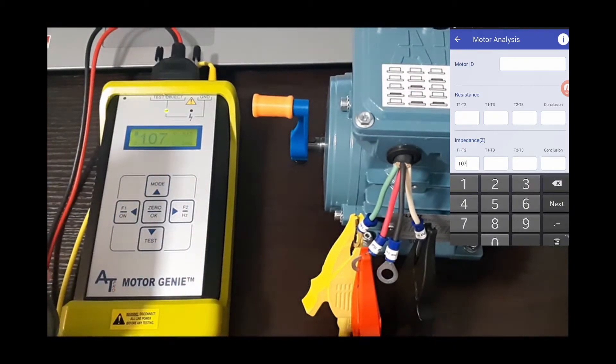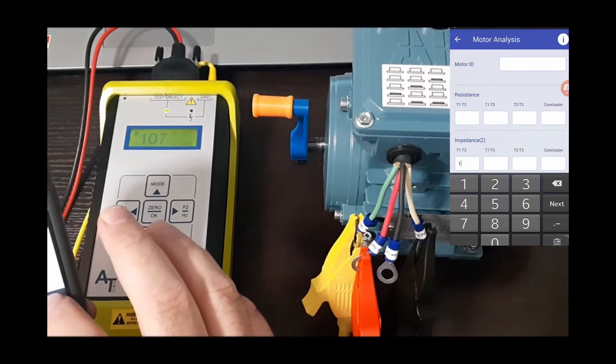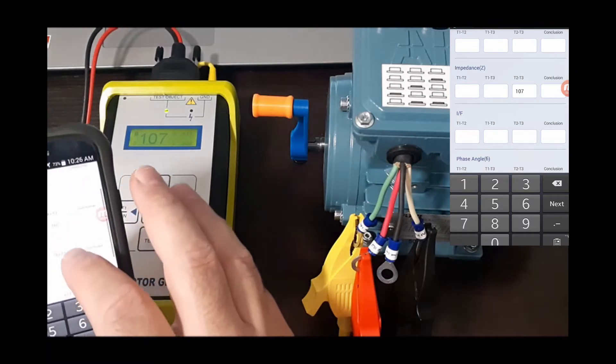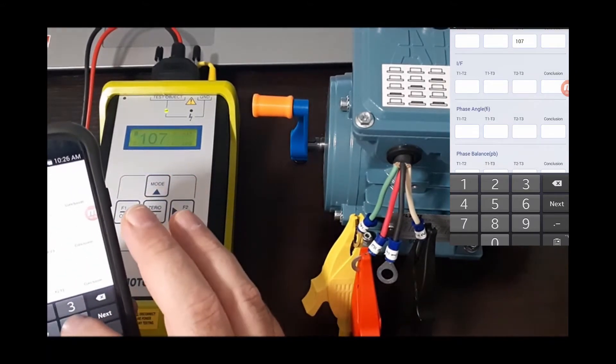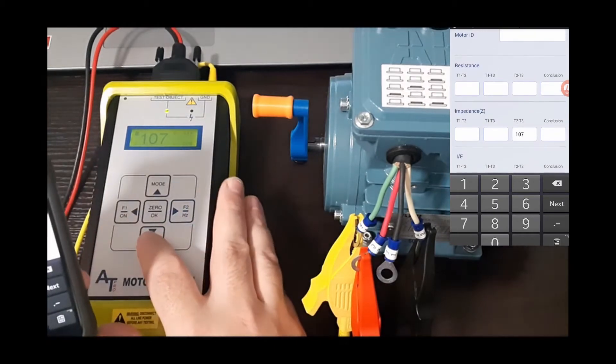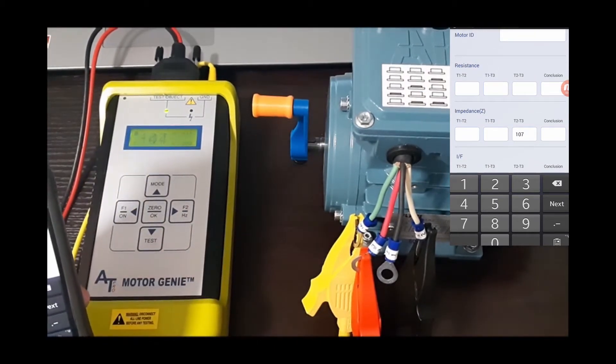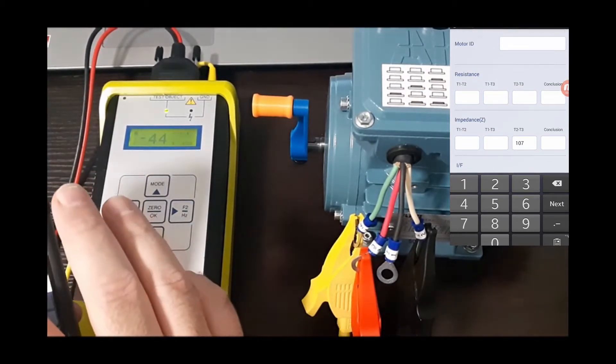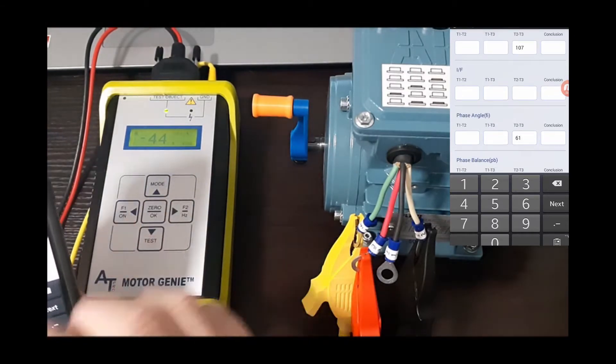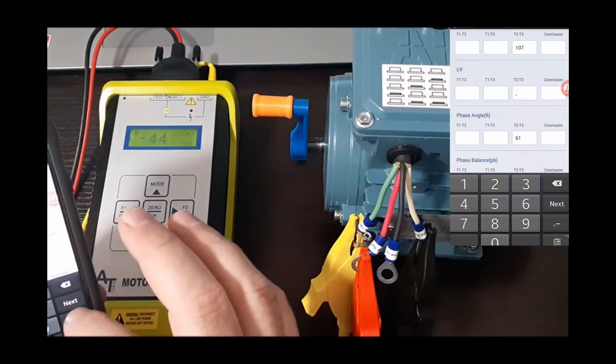107 and we're on 23. Our phase angle is 61 and press test and we'll see IF is minus 44. And now we're on to the next one.